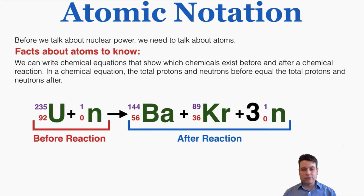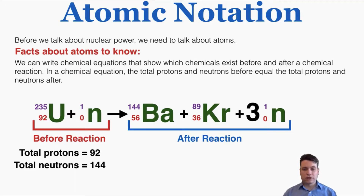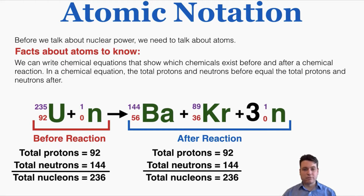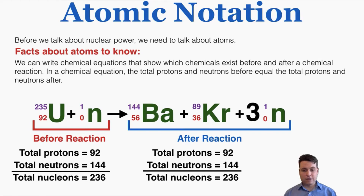We use this notation to write chemical equations showing which chemicals exist before and after a reaction. In a nuclear equation, the total protons and neutrons before equal the total protons and neutrons after. As an example, a single neutron bombards a uranium atom, splitting it into smaller atoms and three additional neutrons. You can add up total protons and neutrons before and after to verify they're equal. You'll need a basic understanding of what's physically happening in such an equation, but won't need to do complex calculations in this unit.